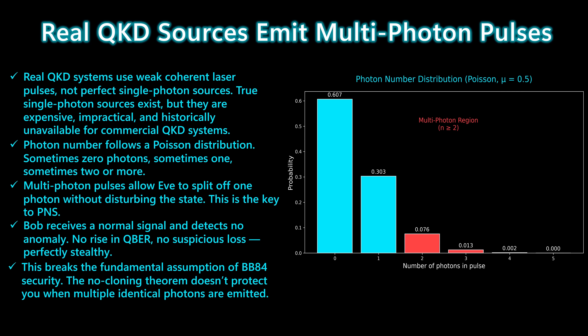If Alice emits two photons in the same state, Eve can siphon off one of them without disturbing the quantum channel. Bob still receives at least one photon, sees no added loss, and records a normal detection event. This subtle imperfection breaks the core assumption of BB84 security and allows Eve to learn part of the key with absolute certainty.